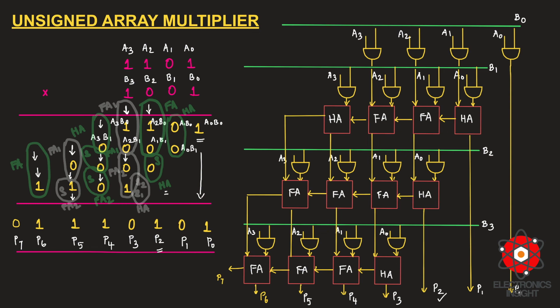This is how we complete the hardware design of the unsigned array multiplier. Whatever multiplier dimension is required — 3×3, 4×3, or 4×4 — take a concrete example to identify whether a half adder or full adder is needed at each stage. For a 4×4 multiplier, we will always have 16 AND gates. Understanding the half adder and full adder requirements lets us verify the structure's correctness.